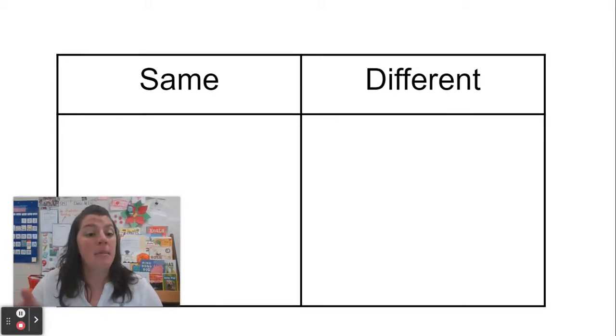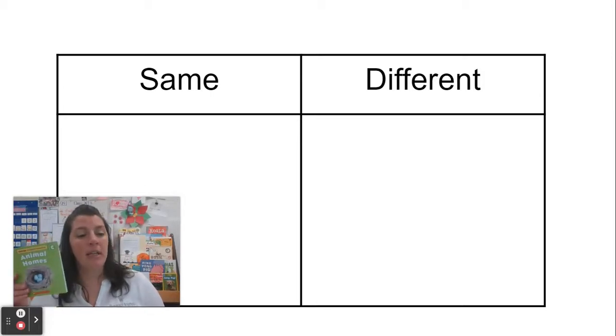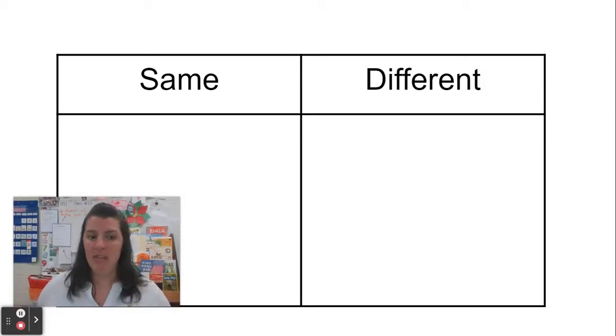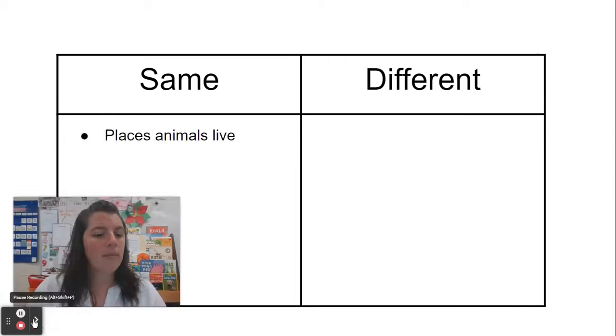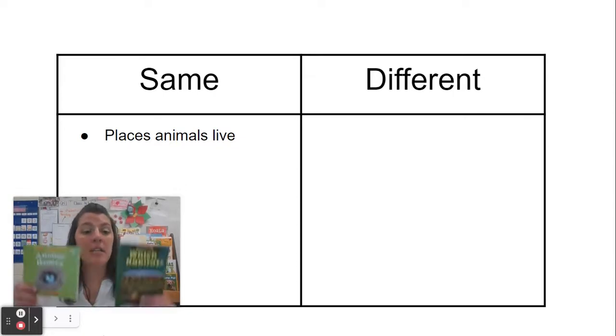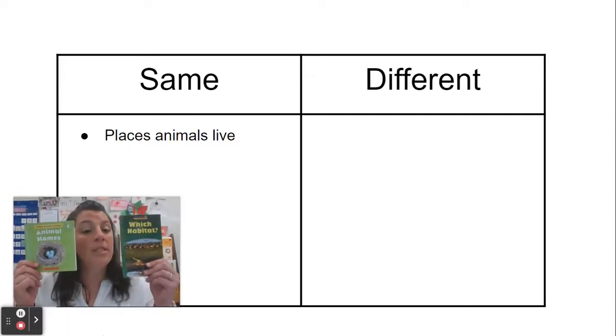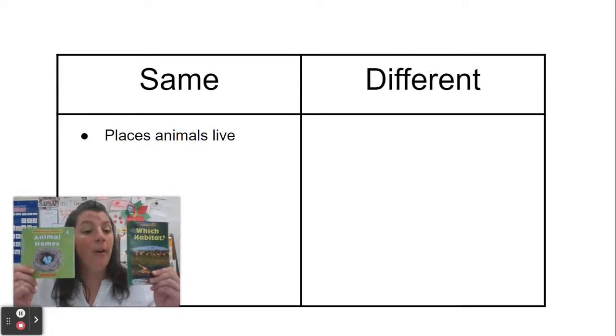Remember, that means that it happened in both books, or things that were different. Maybe something that was only in this book, or something that was in this book. So, let's start with things that were the same. Something that was the same in both of these books is that they talked about places that animals live, or their homes.